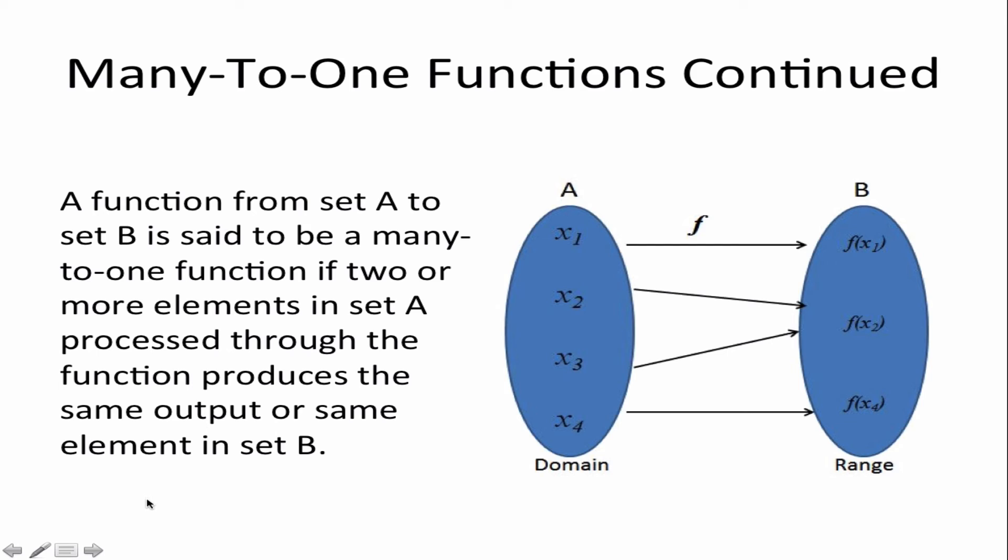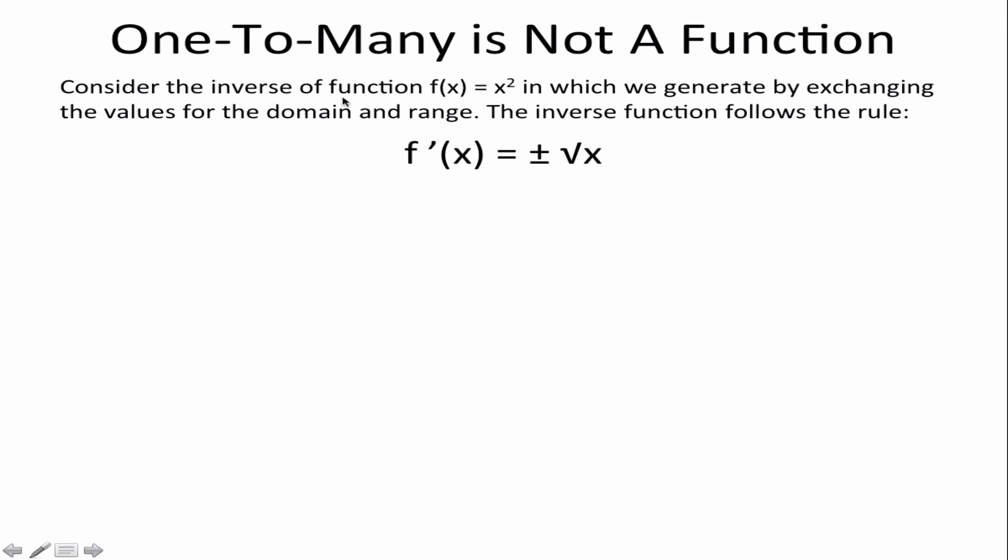All right let us consider the inverse of the function we had before. So I'm going to swap the domain and range. Essentially that's what inverse is at this point in time. I'm going to go more in depth on inverse later on but for right now we're going to change the domain and range. So the domain now will be 0, 1, 4 and my range is equal to minus 2, minus 1, 0, 1, 2.